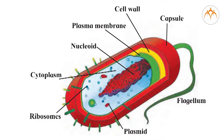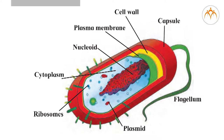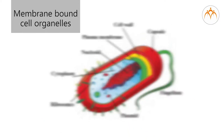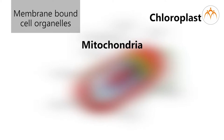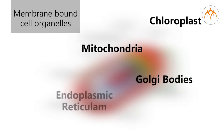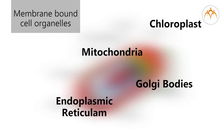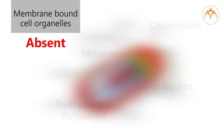A true nucleus has a nuclear membrane inside which the DNA molecule is present. Other membrane-bound cell organelles like chloroplast, mitochondria, Golgi bodies, or endoplasmic reticulum are absent. In prokaryotic cells, genetic material is distributed throughout the cell.